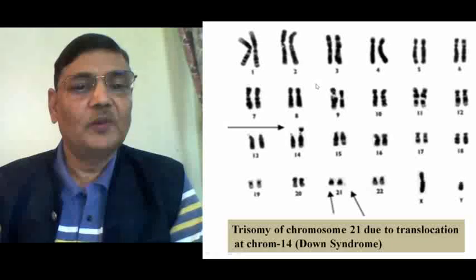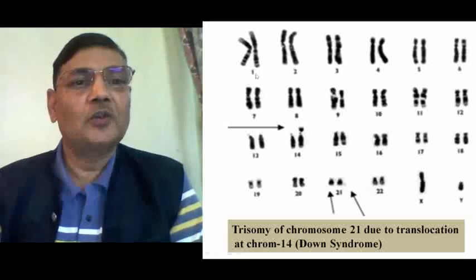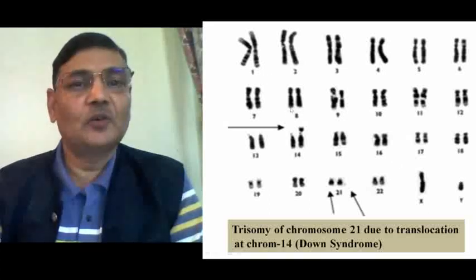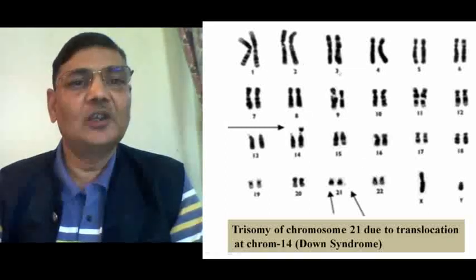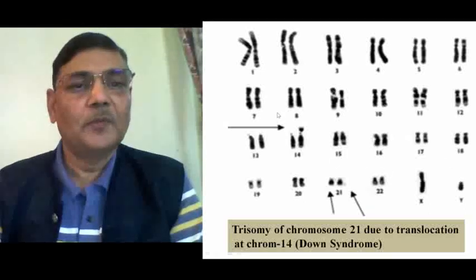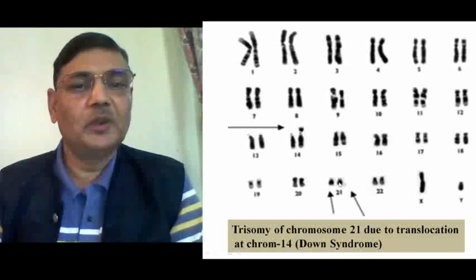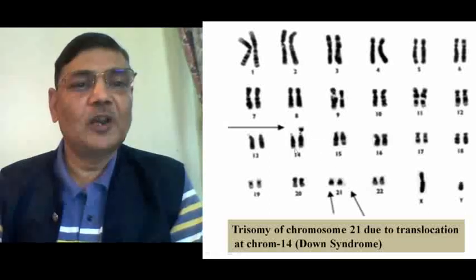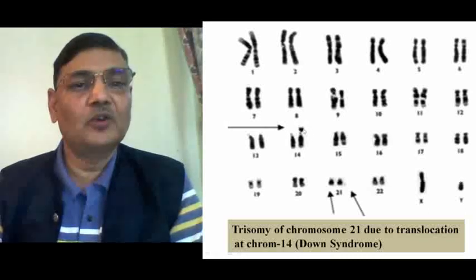An example of translocation can be understood in this diagram showing a human chromosome karyotype, where all 23 pairs of chromosomes are displayed — 22 pairs of autosomes and the X and Y chromosomes, indicating this is a male individual. What we observe is that chromosome 21 is present twice, as it normally should be. However, a third chromosome 21 is translocated to one of the chromosomes 14. This arrow indicates the translocation portion — the translocated chromosome 21 on chromosome 14 — making this a case of trisomy 21.